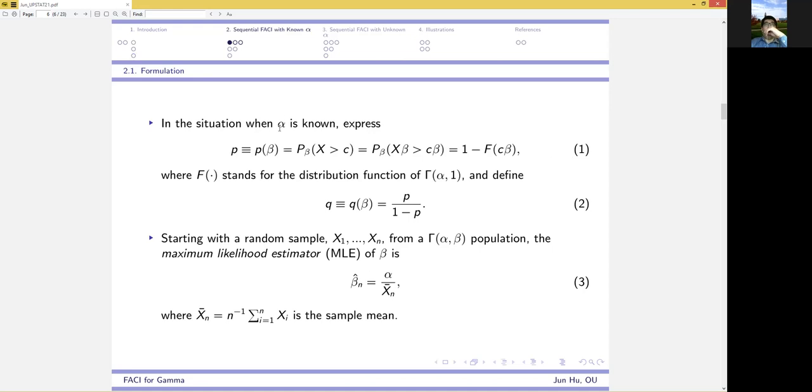Now, in the situation where alpha is known, we can express the probability of interest as 1 minus F of c times beta, where F stands for the incomplete gamma function. So, the probability is a function of beta.